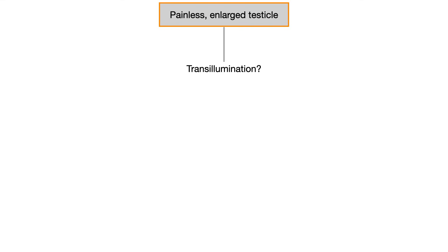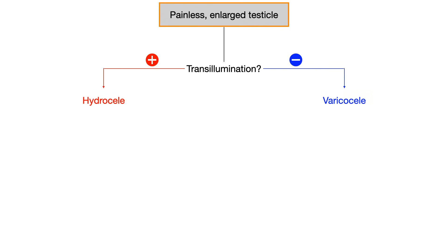Positive transillumination means the light shines through and it's cystic — we're dealing with a hydrocele. Negative transillumination means the light is blocked and it's solid — we're dealing with a varicocele.